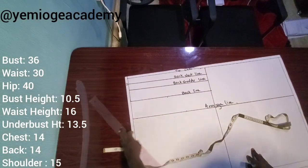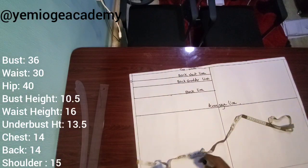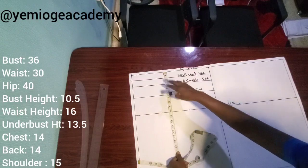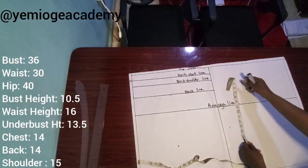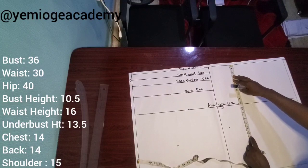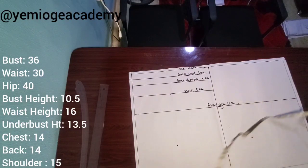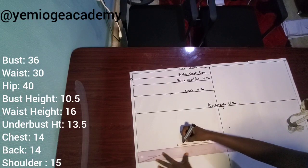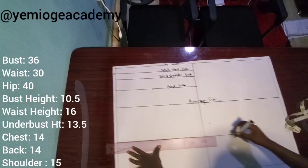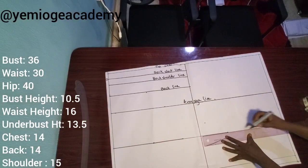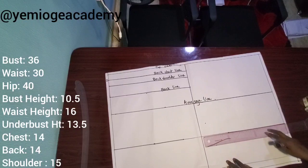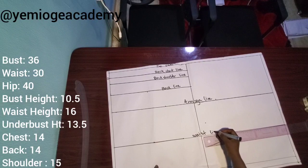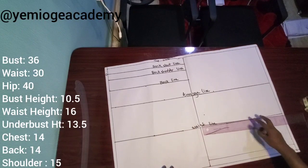The next line is the waistline. From the top line, measure your waist height. In this case it's 16. So your waistline will also run across the sheet from the back to the front. Some measurements are meant for the back alone, some for the front alone. But the arm skyline, the waistline, and the hip line run across from back to front. So you label that the waistline.